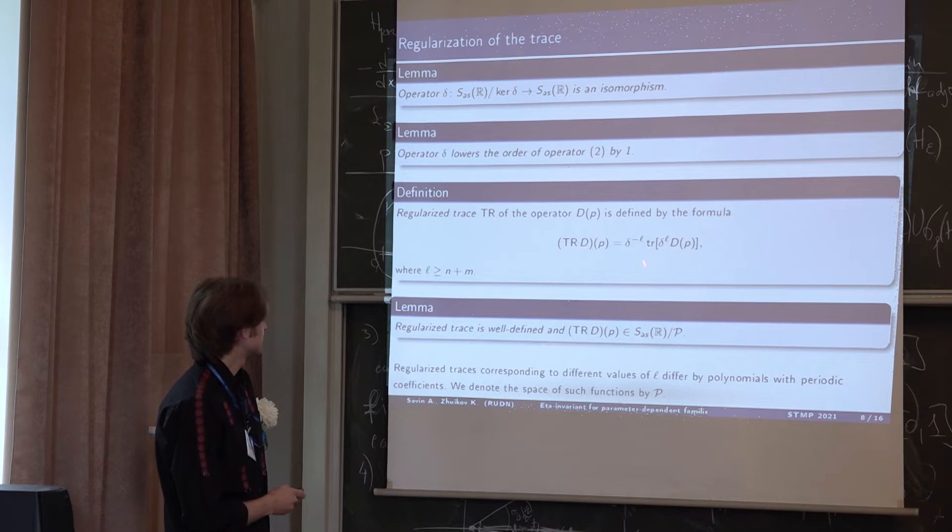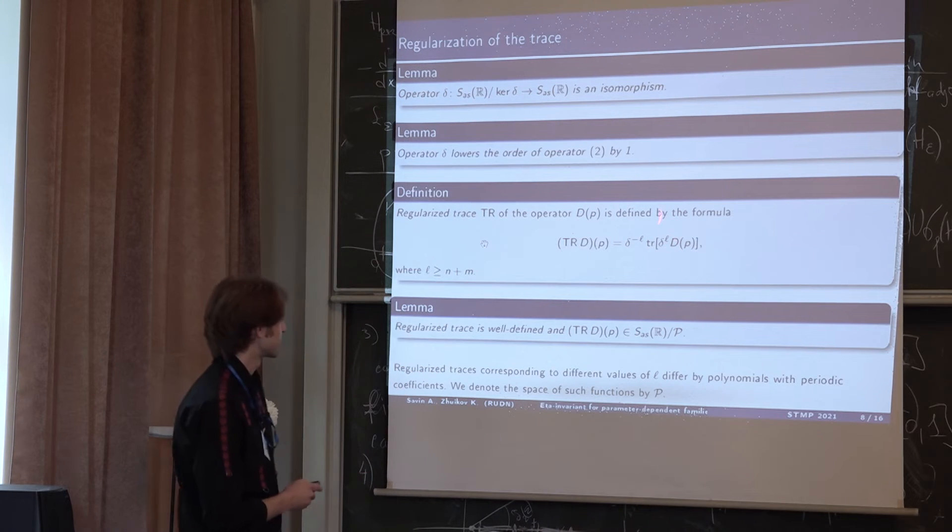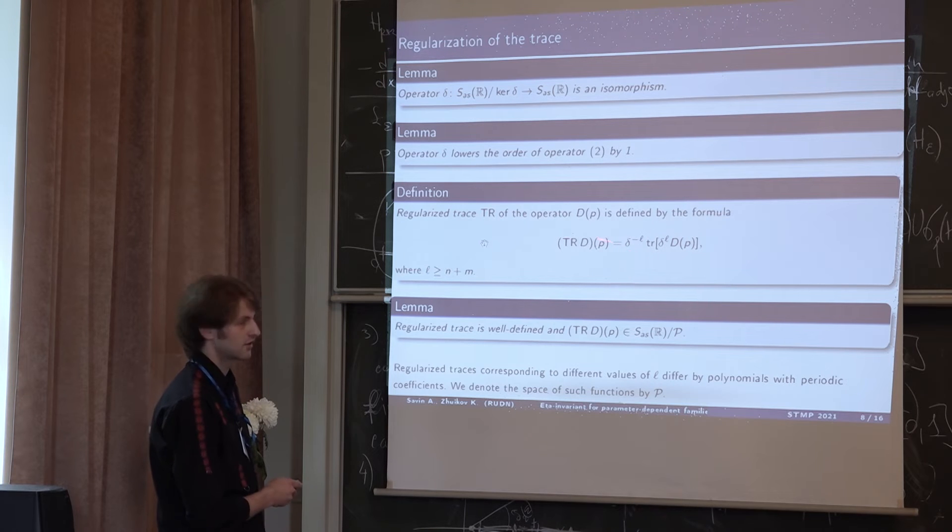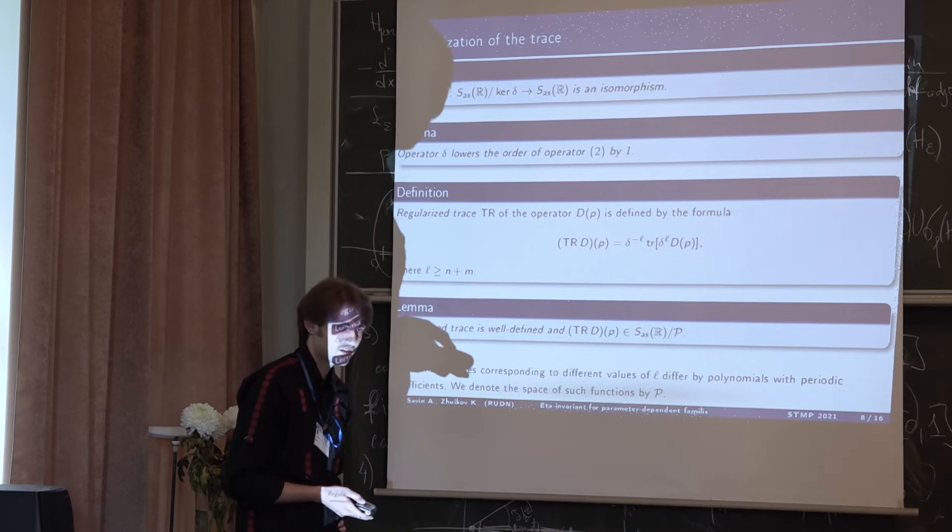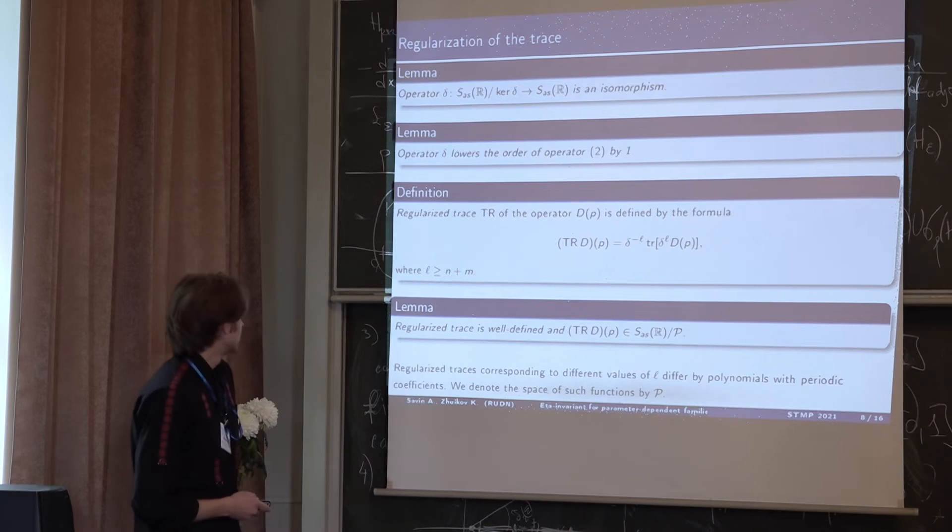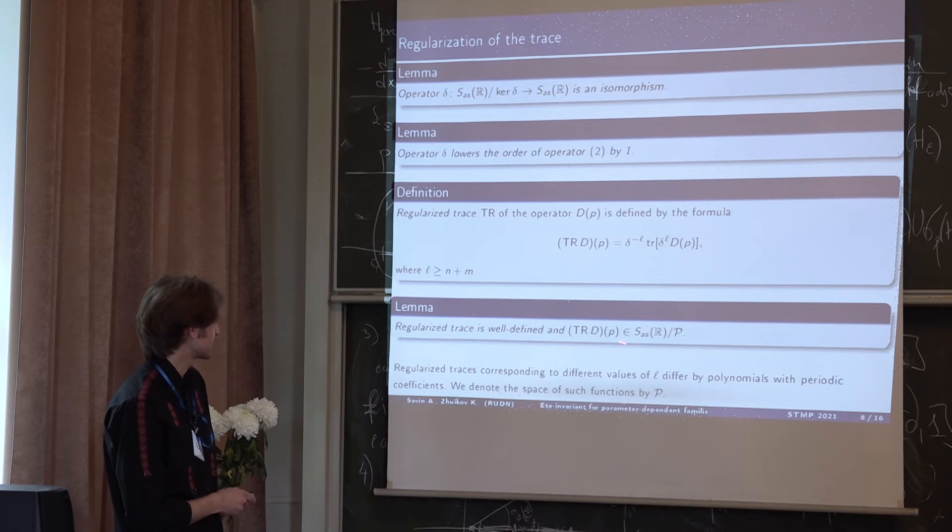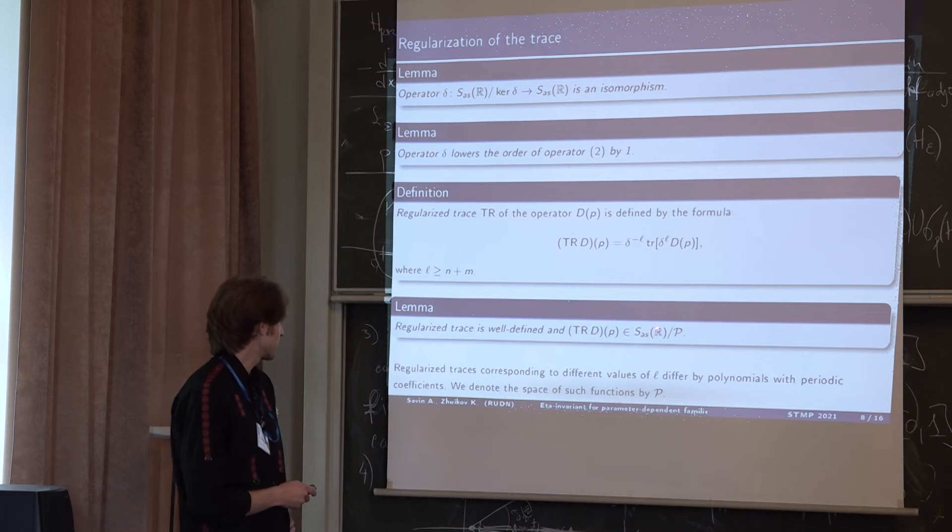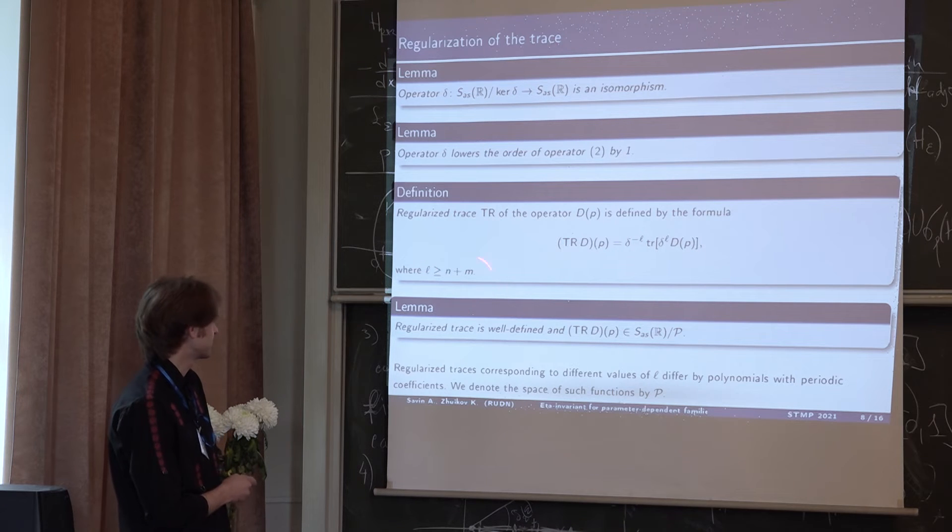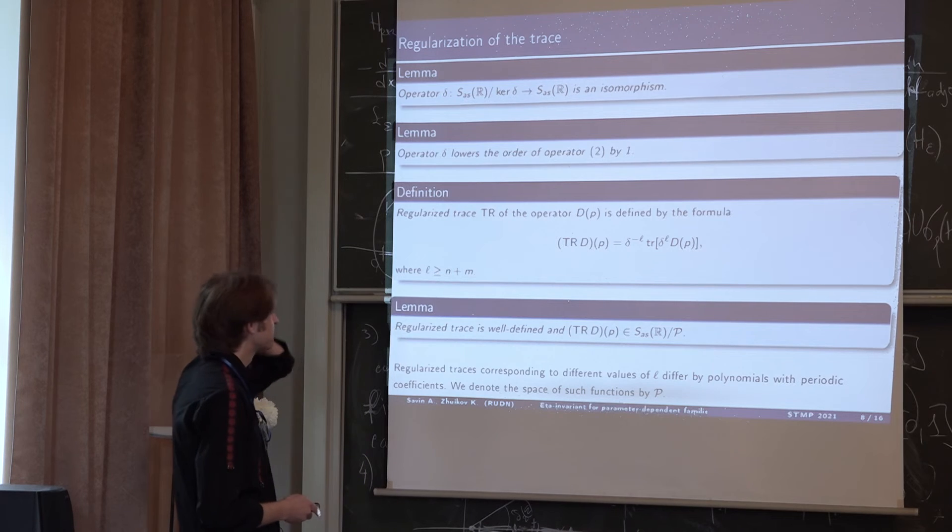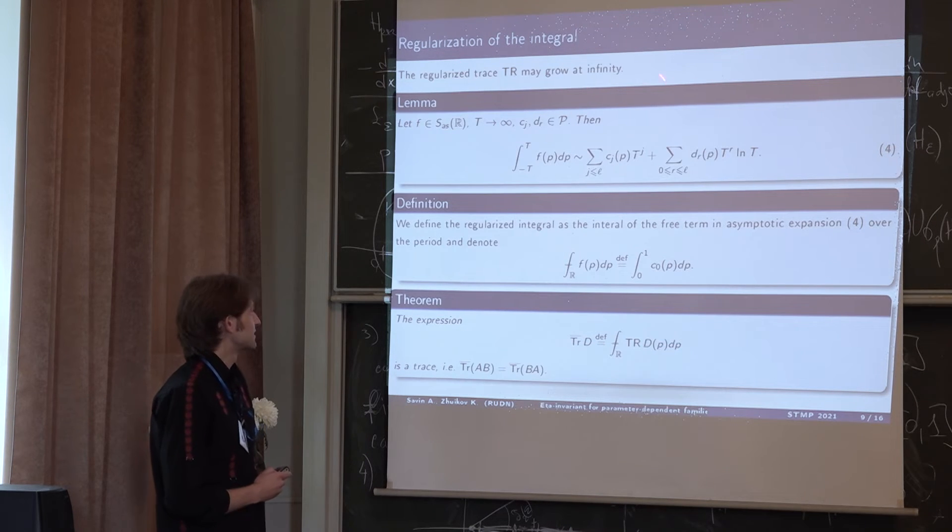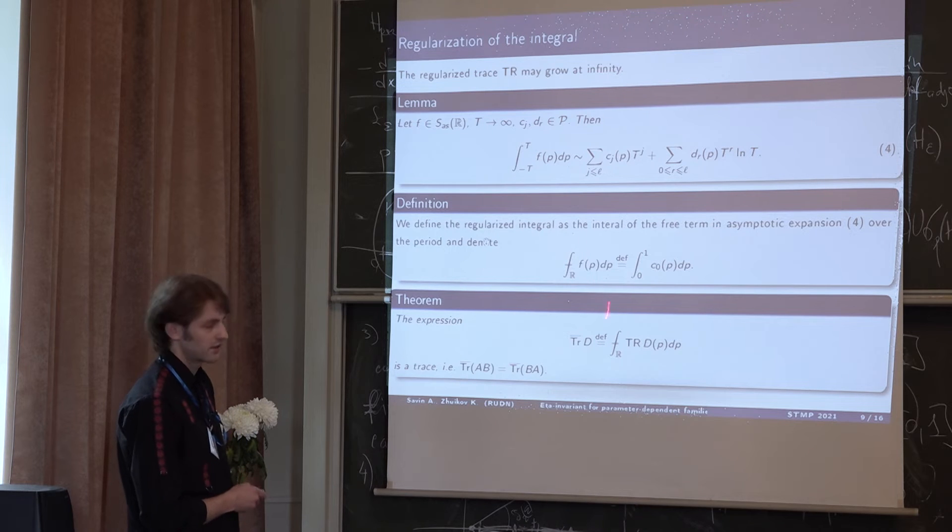So we just need to take derivative L times. The order is lowered so it's trace class and then we just come back. This is our regularized trace and here L is greater or equal than N plus M where N is the dimension of our manifold and M is the order of our operator. Then the regularized trace, this one TR capital appears to be in this class. We can take different Ls. It's just supposed to be greater than this number. So when we take different Ls, our traces just differ by polynomials with periodic coefficients. This quotient is here for that.